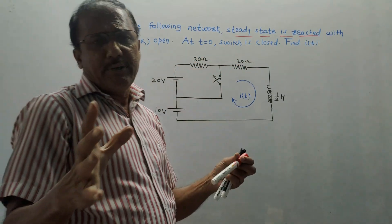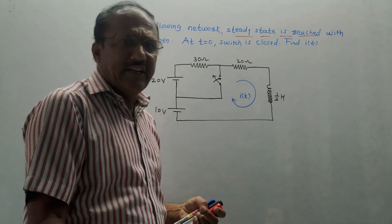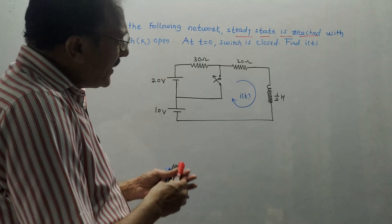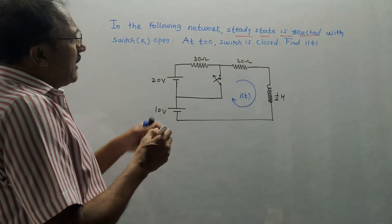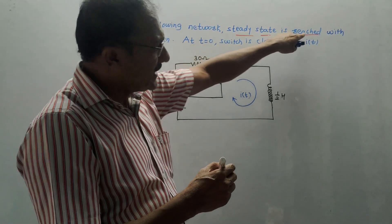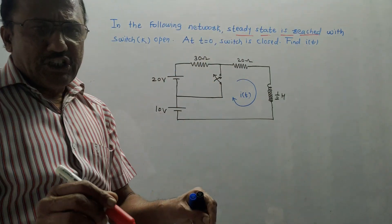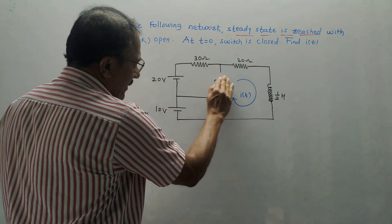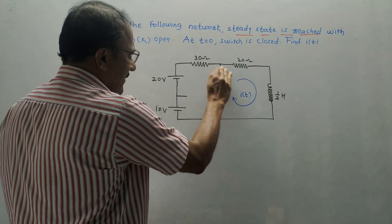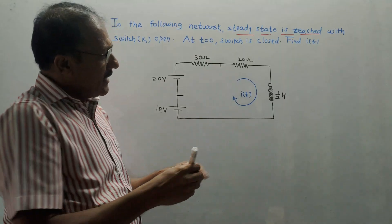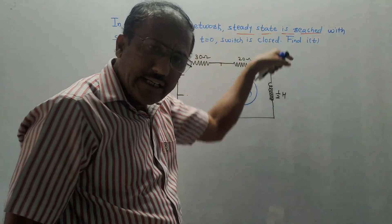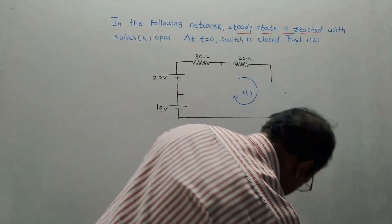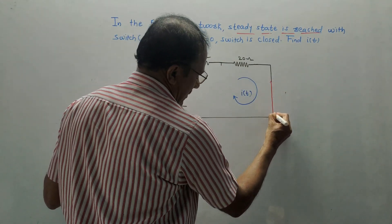In all numericals, the first step is we need to calculate the initial current — that is, the initial conditions. To calculate the initial current, we need to refer to this sentence: steady state is reached, and under steady state, inductor acts as short circuit. The switch K is open, so I will remove this branch because it is open circuited. I have removed this branch, and under steady state, inductor acts as short circuit, so I will replace this inductor with a direct line.